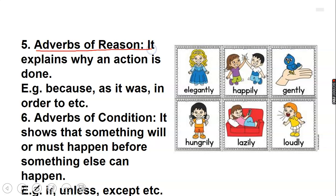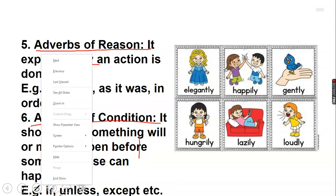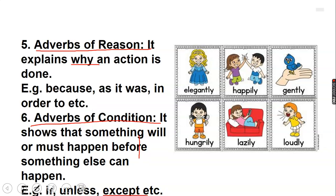Now we come to adverbs of reason. They show why something is happening — why an action is done. We have words such as because, as it was, in order to. Like somebody saying: I will go because he invited me. The because there is telling us the reason why something is done. Then we have adverbs of condition. It shows that something will or must happen before something else can happen. If you don't wash the plate, then I won't help you with your assignment. Conditions tell you that something must happen before another thing happens. We have words such as if, unless, except, and so on.